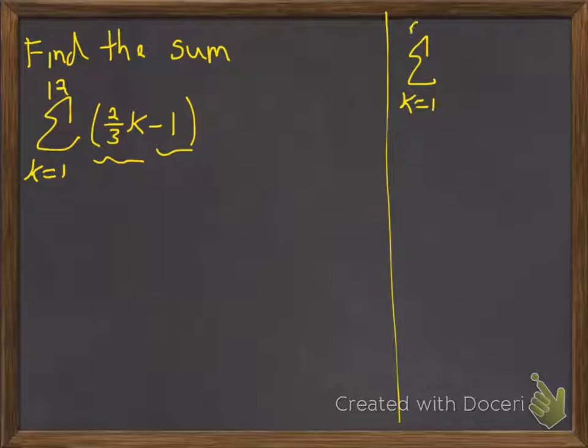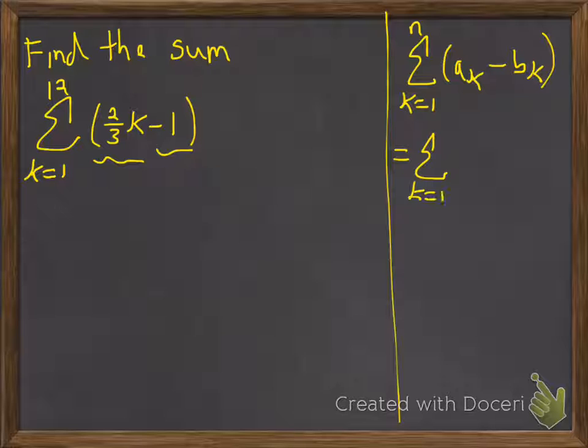So we're going to go k equals 1 to n of a_k minus b_k, and that just allows us to sum up the a_k's, sum up the b_k's, and then subtract them afterwards. Just convenient there.